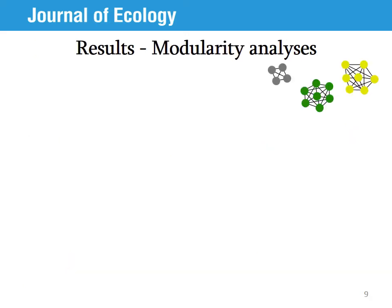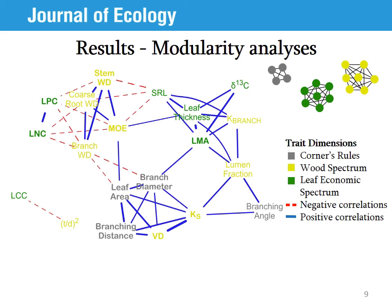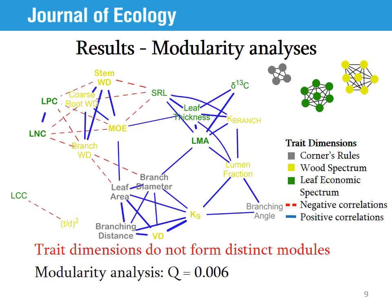What do the modularity analyses say? Remember, we expect something like the graph in the top right of the screen. Here is what the trait correlation network of our data looks like. The position of the circles, representing traits, has been optimized by an algorithm to reflect the correlation structure in two dimensions — traits closer to each other are more strongly correlated. The thickness of the lines reflects correlation strength; red dashed lines reflect negative correlations and solid blue lines reflect positive correlations. Just by looking at the graph, we see that the colors are not grouped together, and there are many correlations between traits from different dimensions. The modularity analysis confirmed that trait dimensions do not form independent modules: we get a Q statistic of zero, indicating as many intramodular correlations as expected by chance.